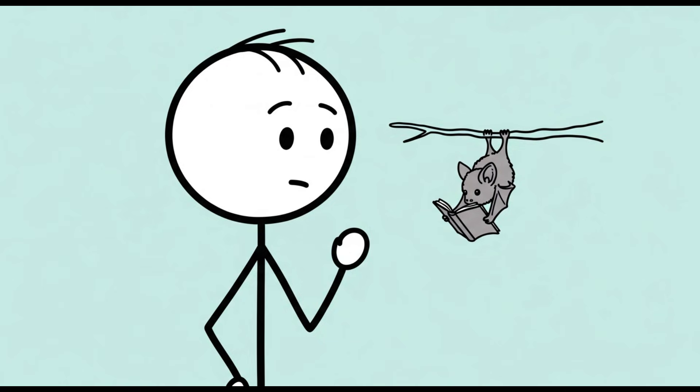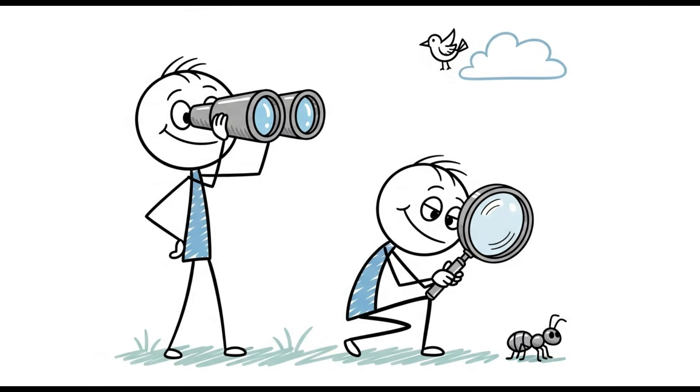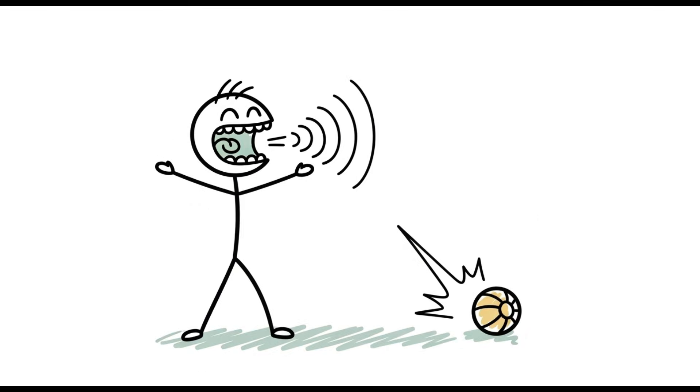The smaller bats, the microbats, do have smaller eyes, but they are fully functional. They can see just fine. Thank you very much. So why the echolocation? Is it just for showing off?